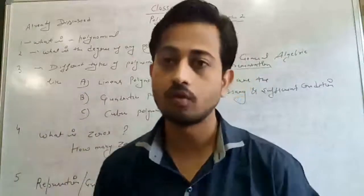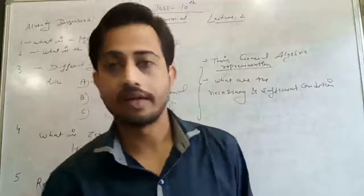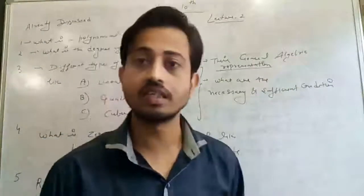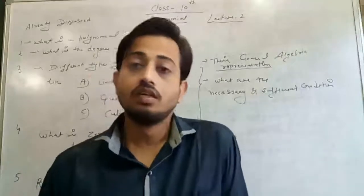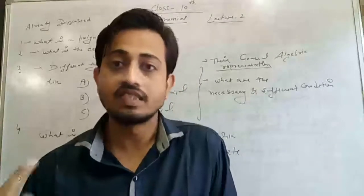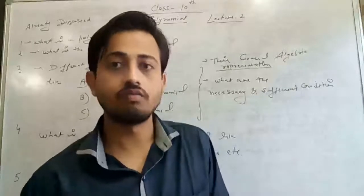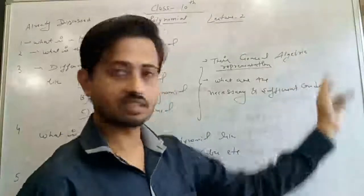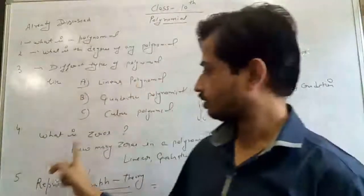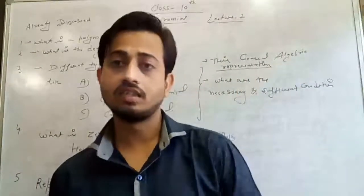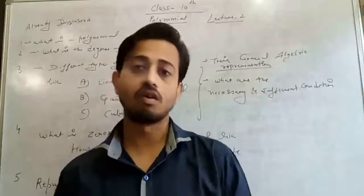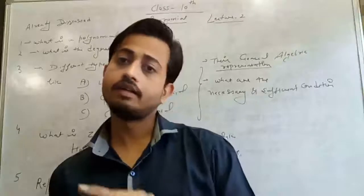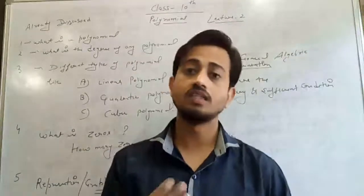We discussed how we represent linear polynomial, quadratic polynomial, and cubic polynomial — their algebraic expressions. We also discussed the necessary and sufficient conditions for a polynomial's existence, whether it exists or not. Then we discussed what a zero is: the zero is that value of the variable at which the polynomial becomes zero. That is called the zero.